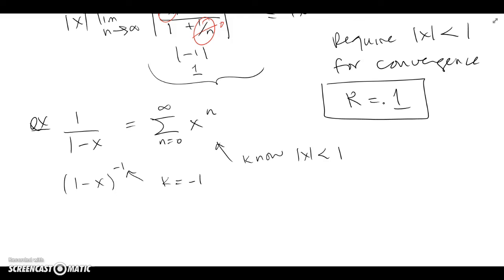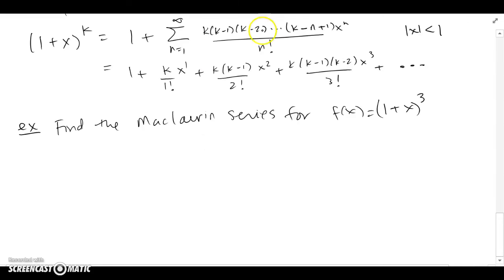Now let's look at some examples for various values of k, showing how to actually use the binomial series instead of differentiating the function over and over to find the Maclaurin or Taylor series. Here's our binomial series expanded out.